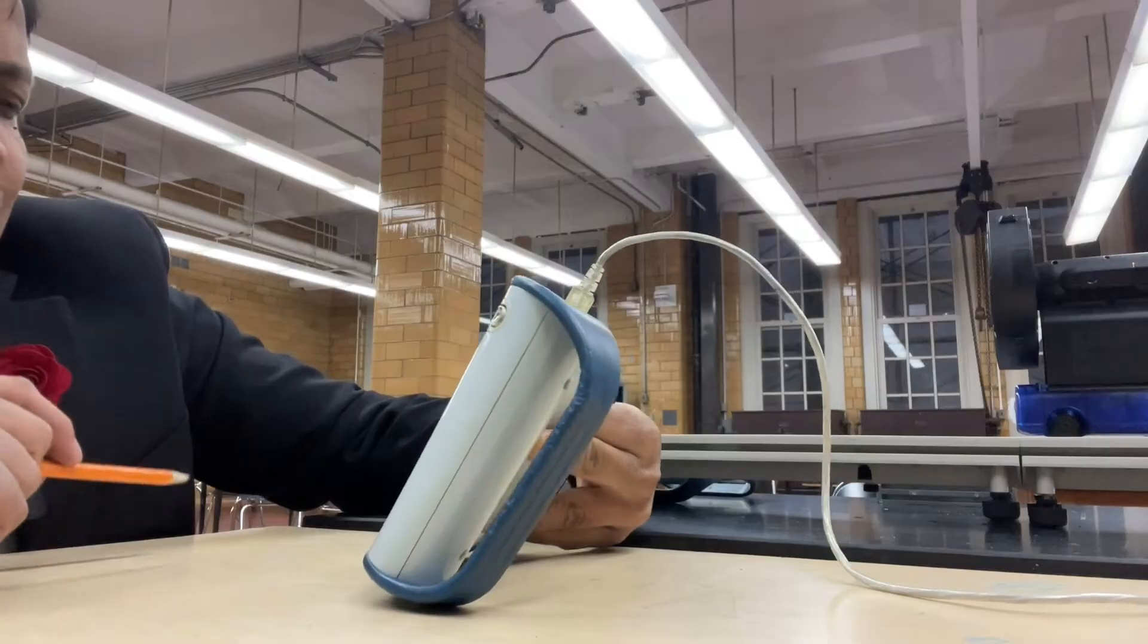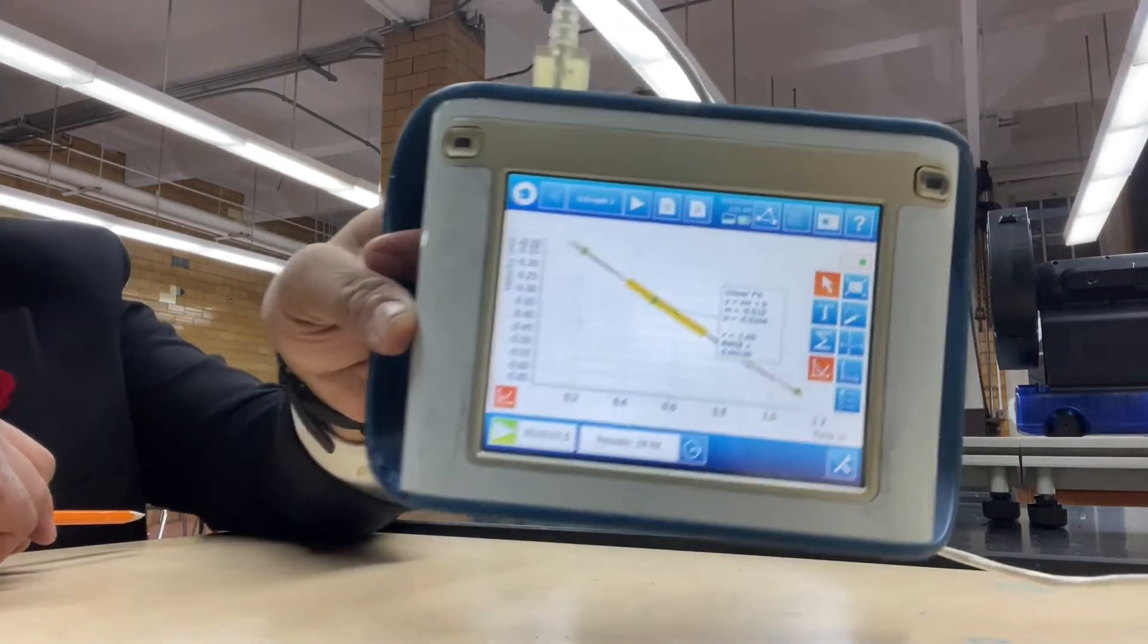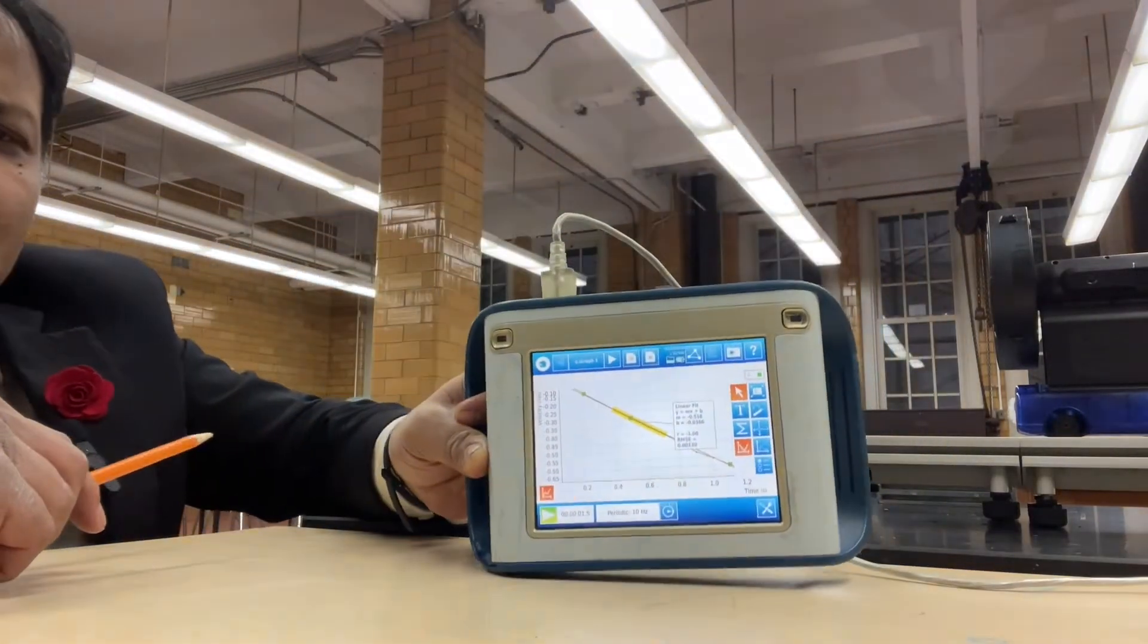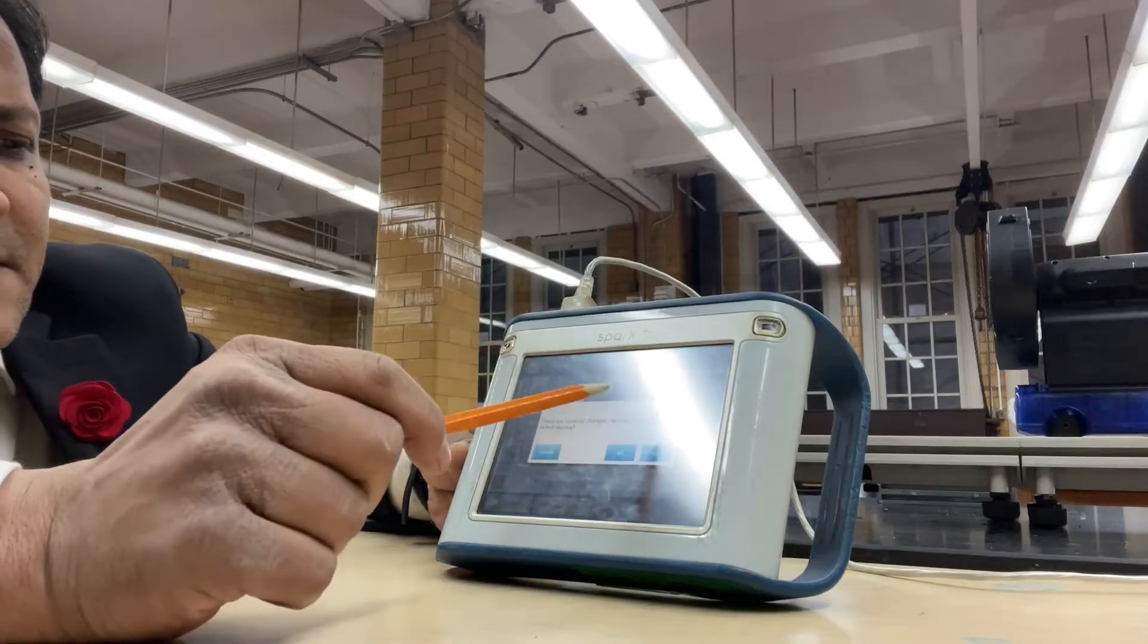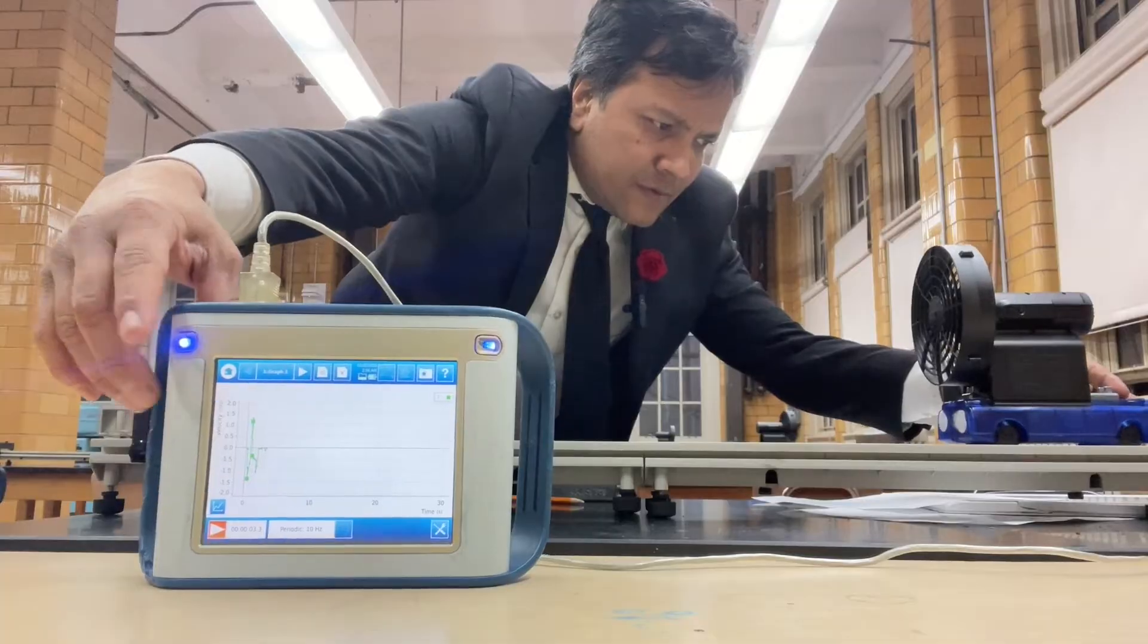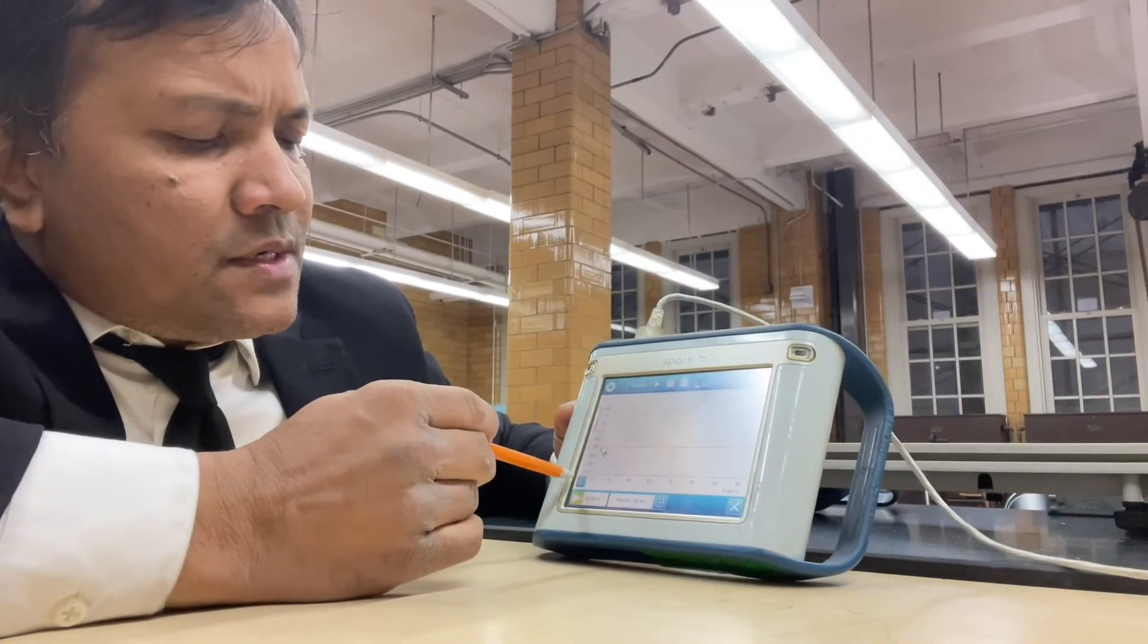I'm going to take one decimal, so 0.5. I'll take the absolute value, so 0.5. I'm going to reset it. So, let's understand it. Calculate, collect the data.